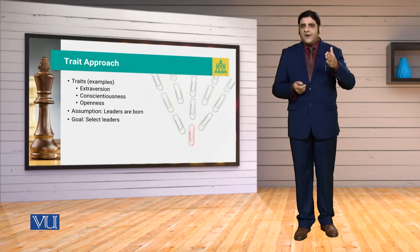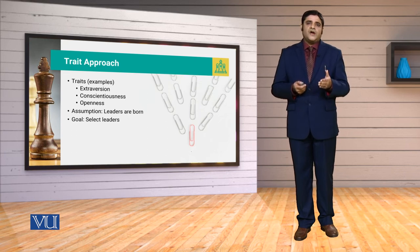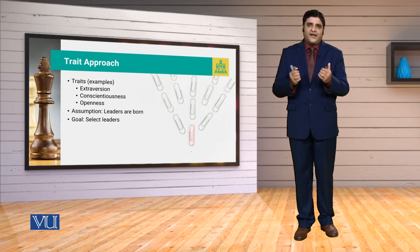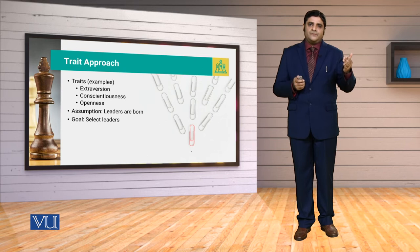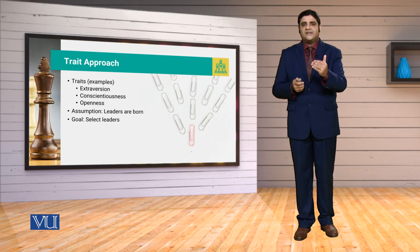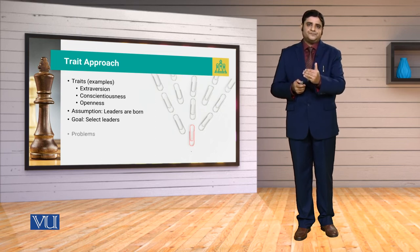Ab, humare paas jo goal trait theories ke aspects mein aya, that was — chunke yeh inborn traits hain, to ab humeh leaders ko select karna hai, because they are selective and chosen people, born with particular traits. Ab humeh unhein select karna hai taake situations ke andar woh humein guide, train, and develop kar sakein.